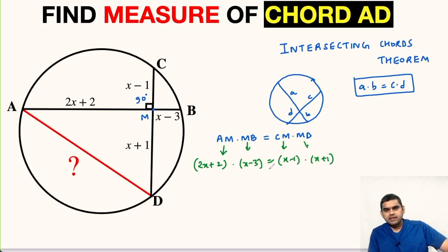Now we will multiply and try to simplify this. So 2X times X will be 2X squared, 2X times minus 3 will be minus 6X.